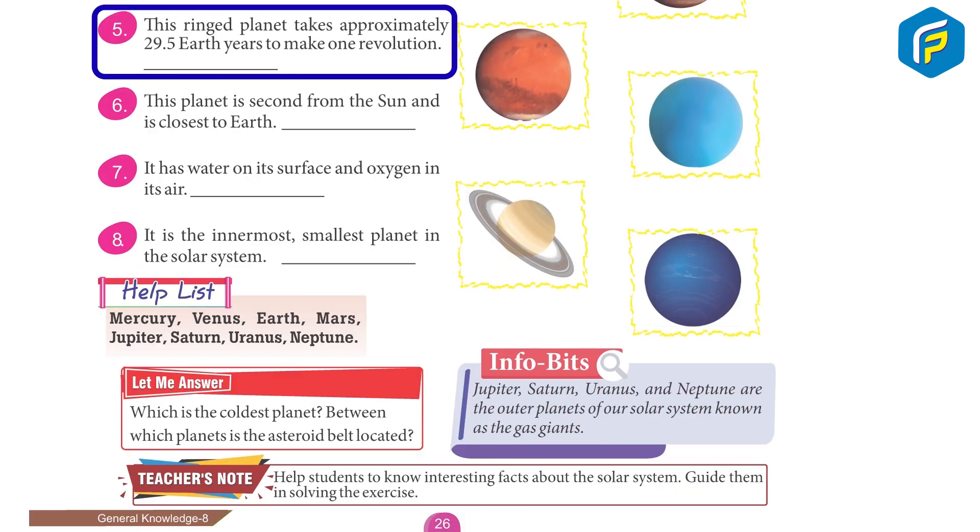5. This ringed planet takes approximately 29.5 Earth years to make one revolution. Saturn.